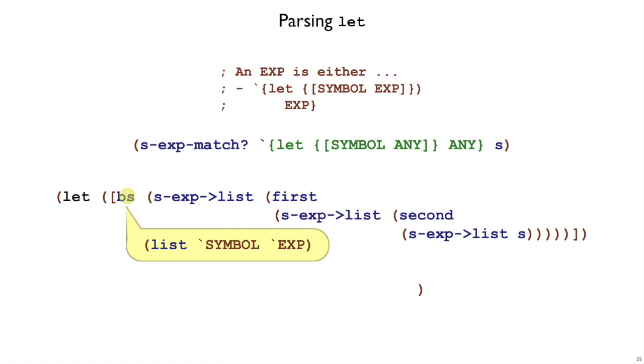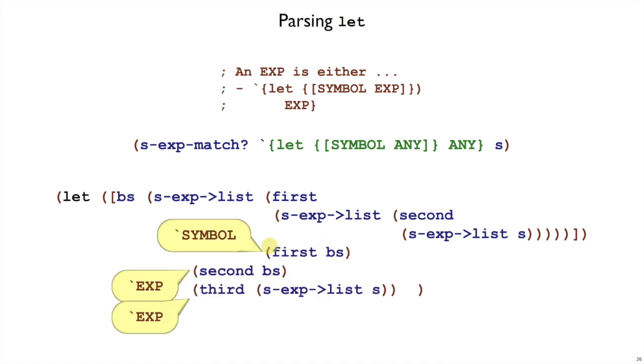And bs stands for binding pieces. So we have the two pieces now, and we need to pull out the first and the second of this. So by taking the first of bs, we get the binding symbol as an s-expression. We get the right-hand side as an s-expression by taking the second.